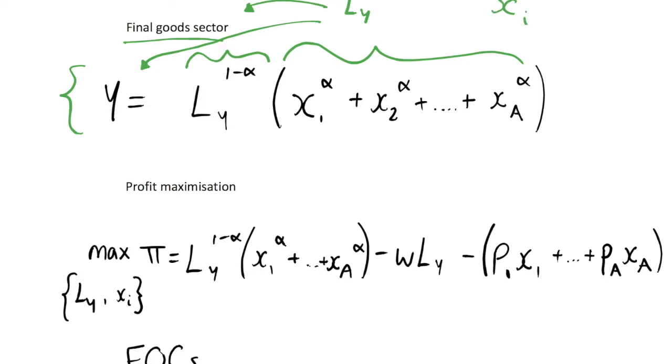And this I goes from 1 all the way up to A, and the reason we use A as the highest possible good, you may get some intuition already from the fact that we use A as our technology parameter.